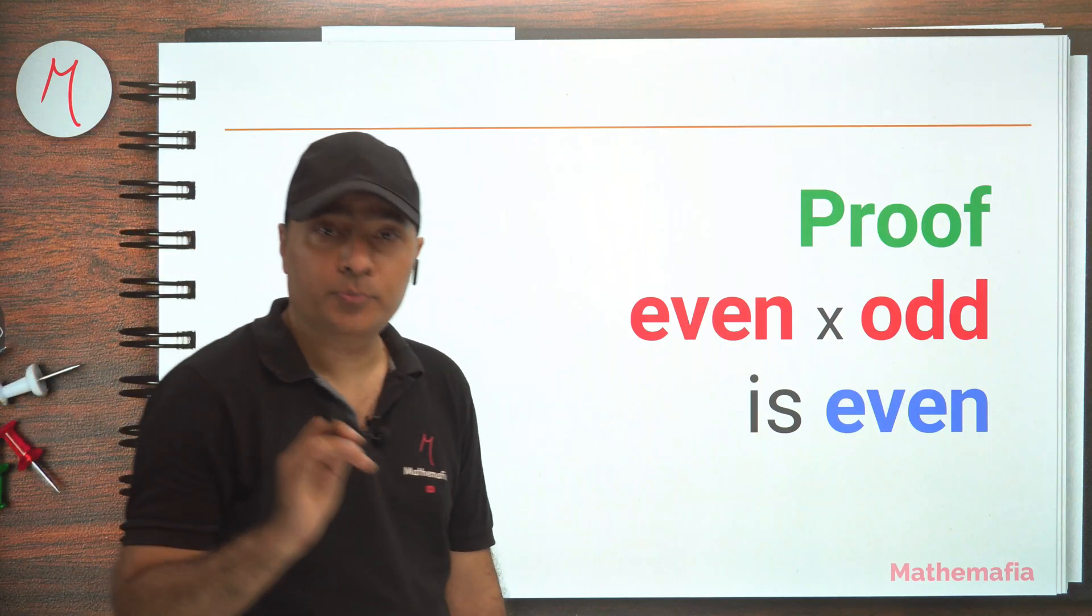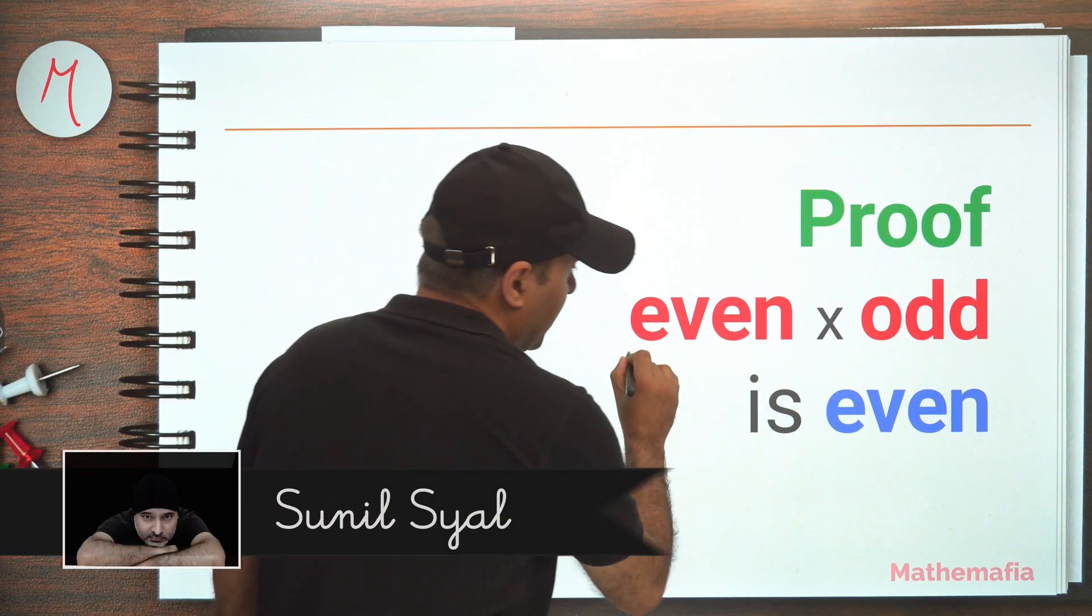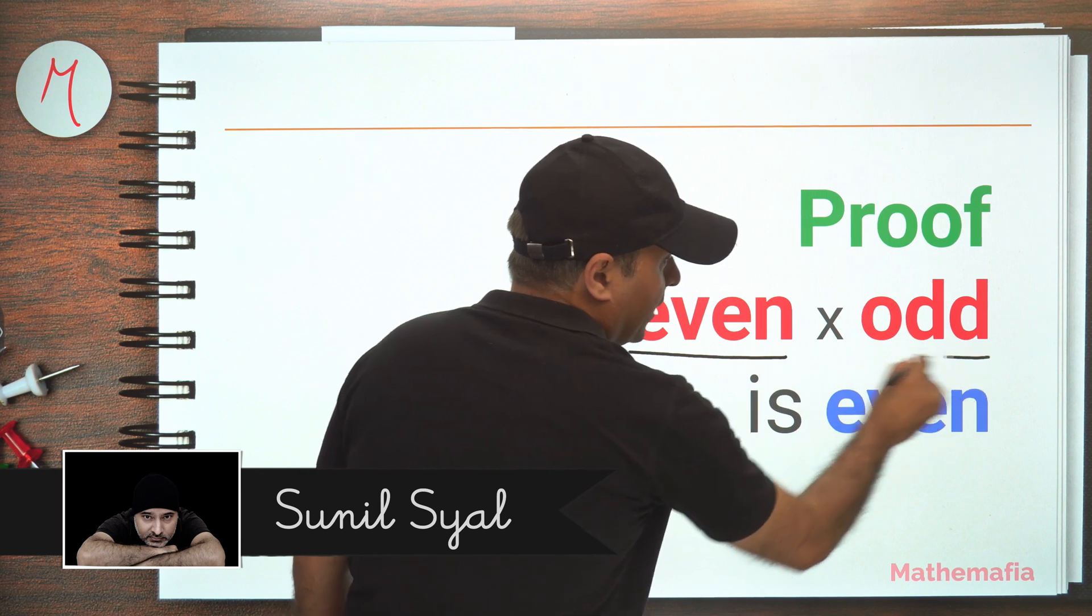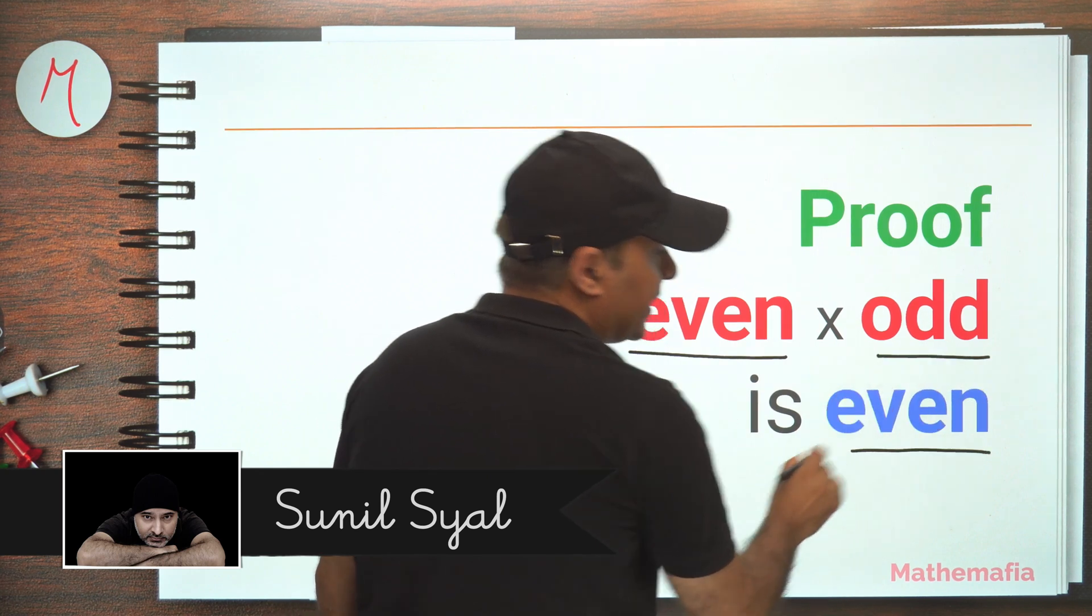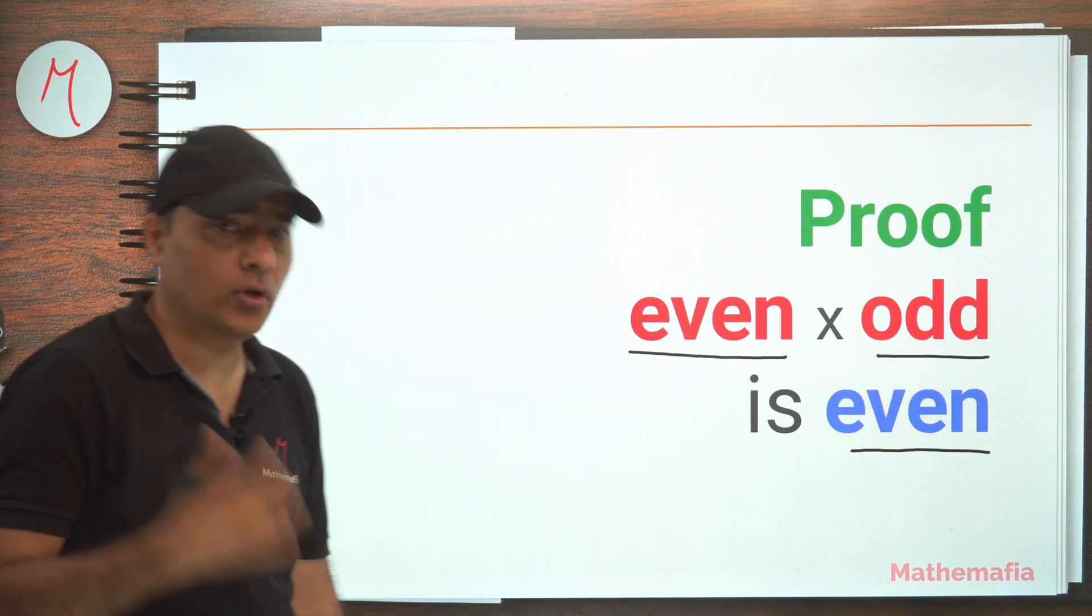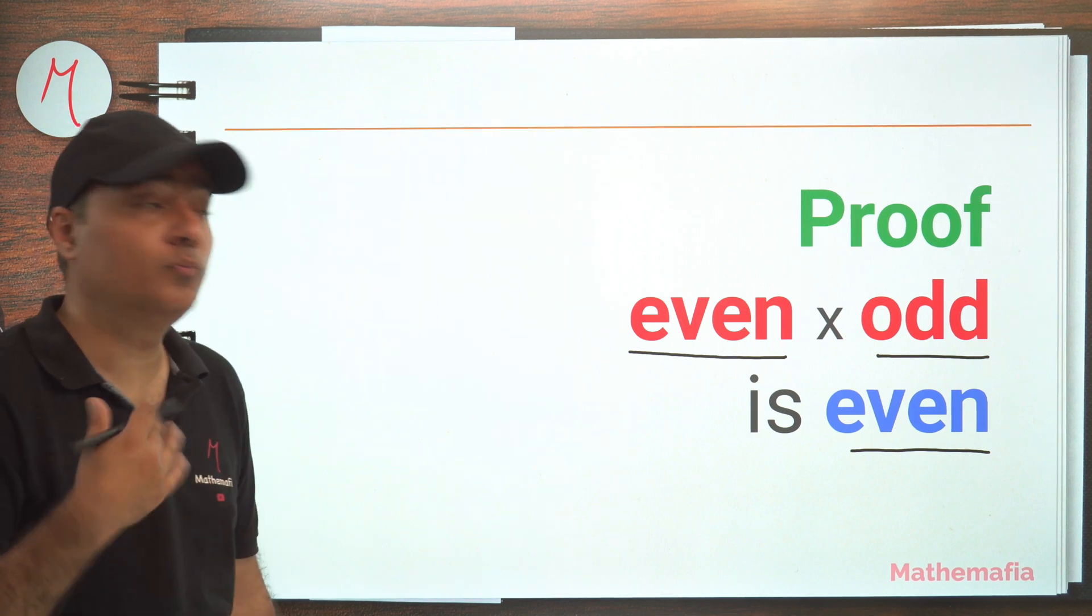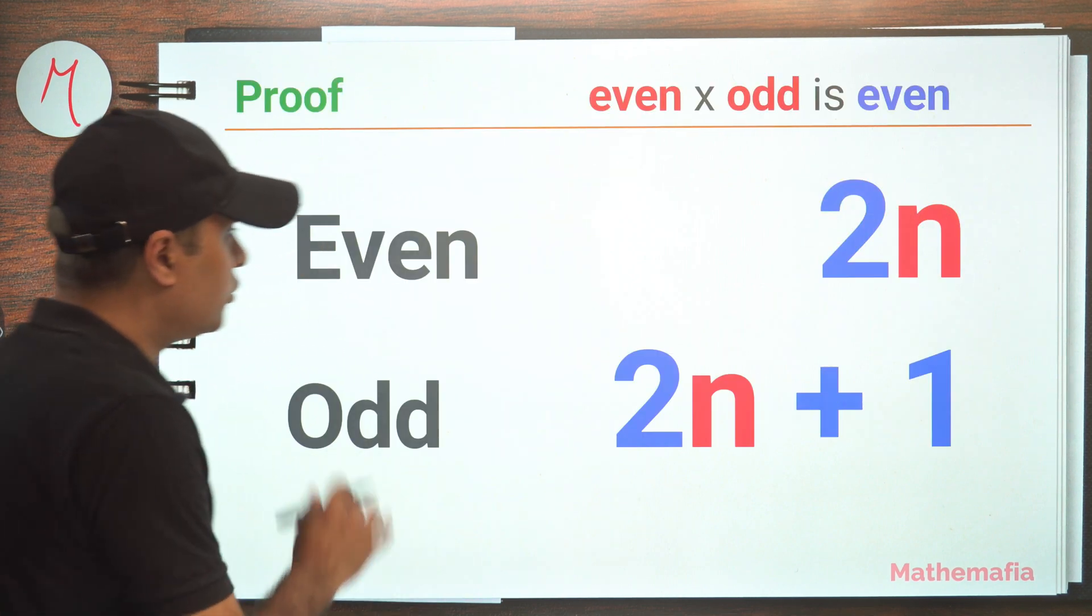In this tutorial, we are going to prove that if we multiply an even number with an odd number, the output is always an even number. We already know that, but now we have to prove it. So let's talk about it.